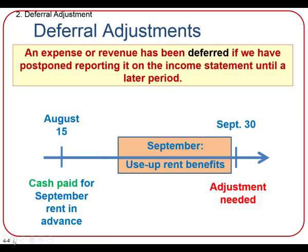The first type of adjustment is a deferral. The word defer means to postpone until later. In accounting, we say an expense or a revenue has been deferred if we have postponed reporting it on the income statement until a later period. As you saw in Chapter 3, when rent is paid in advance, the expense is initially deferred as an asset on the balance sheet in an account called prepaid rent.